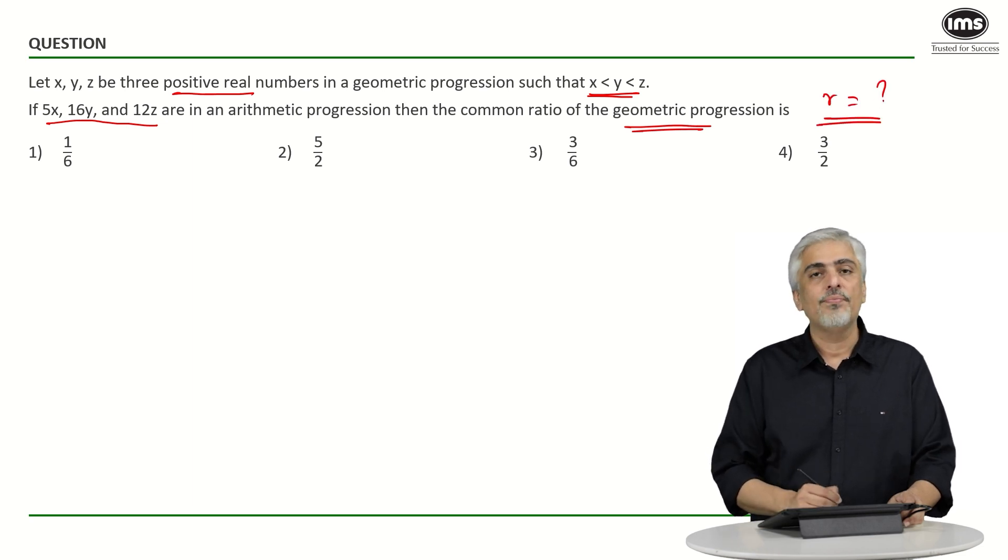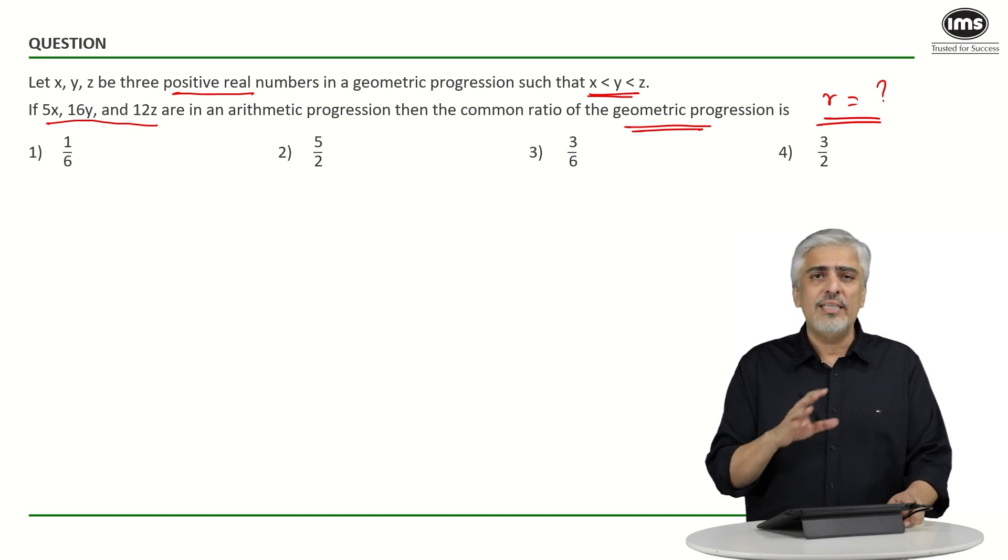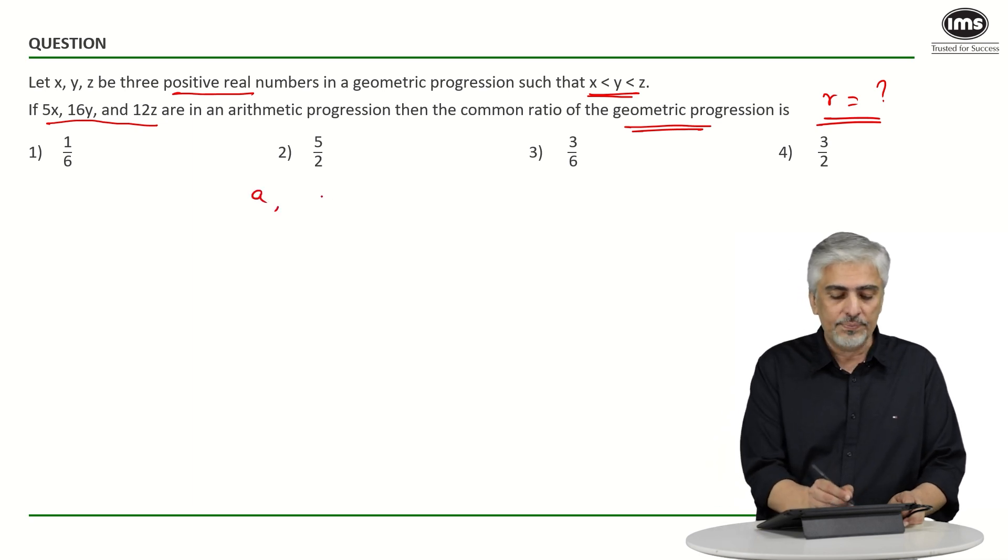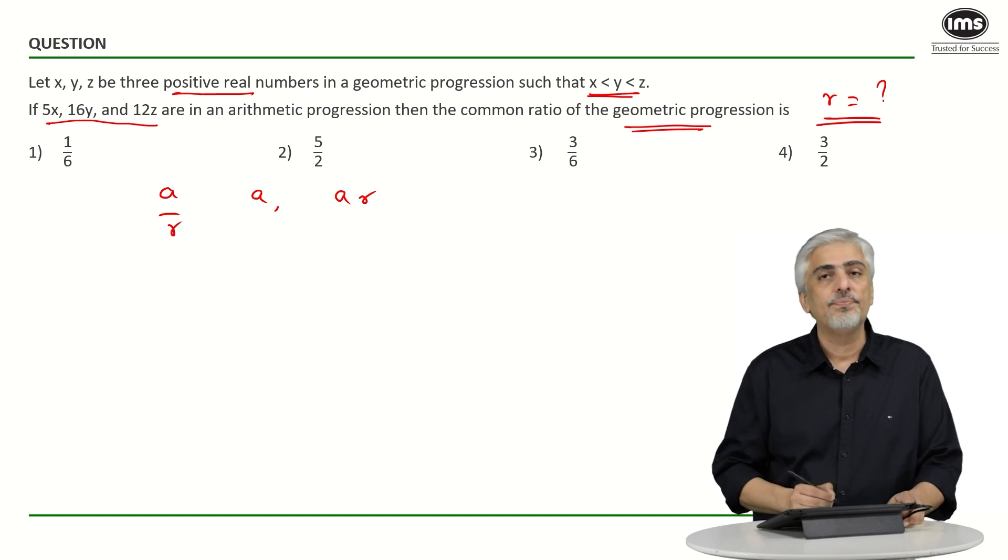Then the common ratio of the GP is what? That means we want to find r, the common ratio. Now whenever there are three terms in GP, it has been mentioned to you a lot of times that you should take the three terms as the middle term as a, the next term as ar, and the previous term as a upon r.